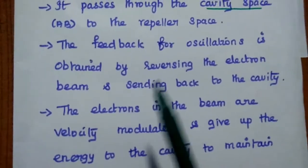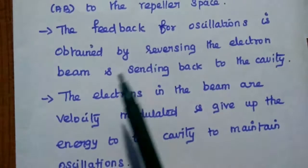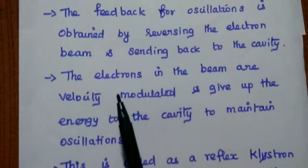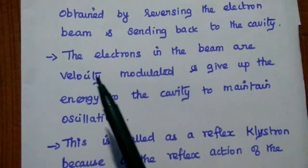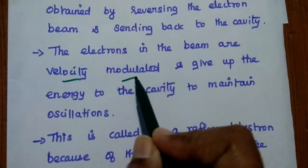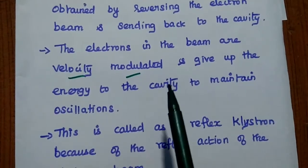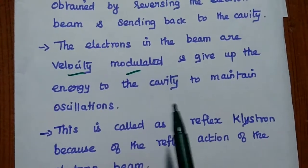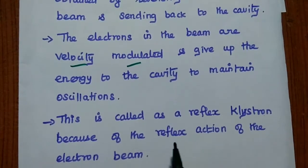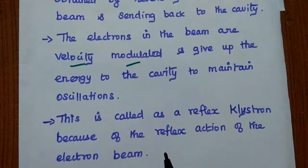For oscillations, we need positive feedback. The feedback for oscillation is obtained by reversing the electron beam and sending it back to the cavity, for which we use the repeller plate. The electrons in the beam are velocity modulated. Velocity modulation is the key point for microwave vacuum tubes. The velocity-modulated electrons give up their energy to the cavity to maintain oscillation. This is called a reflex klystron because of the reflex action of the electron beam due to the repelling voltage.